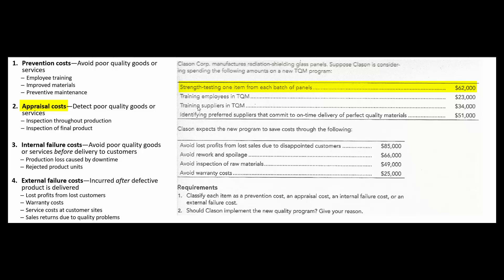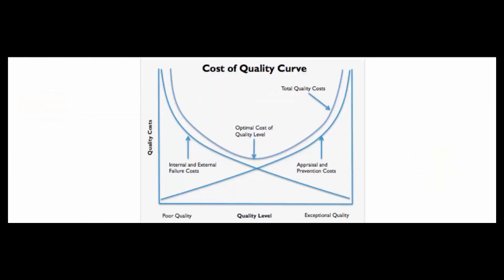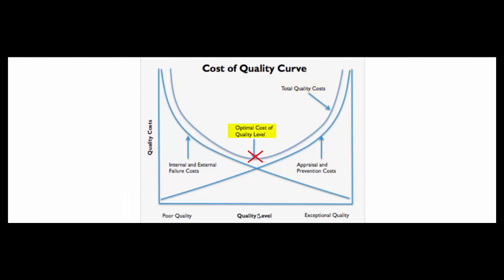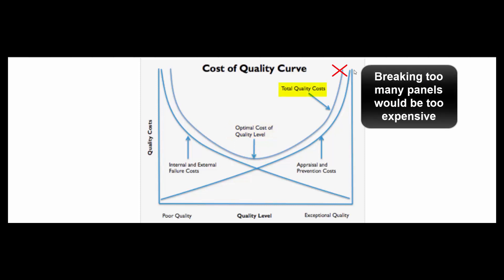In this instance we're talking about breaking one panel to strength test it. We could, if there were a hundred panels in each batch, break 99 of them to strength test them. But that is spending too much money on appraisal and prevention and it's driving our total quality costs up.